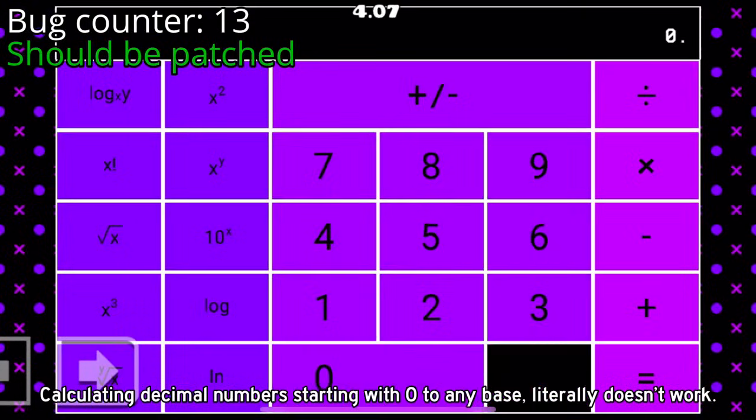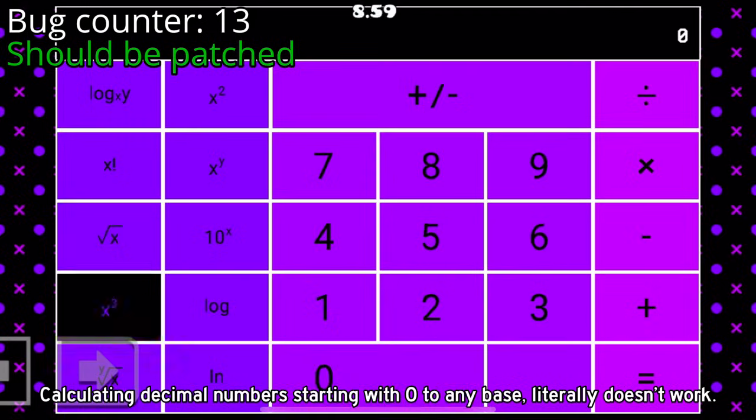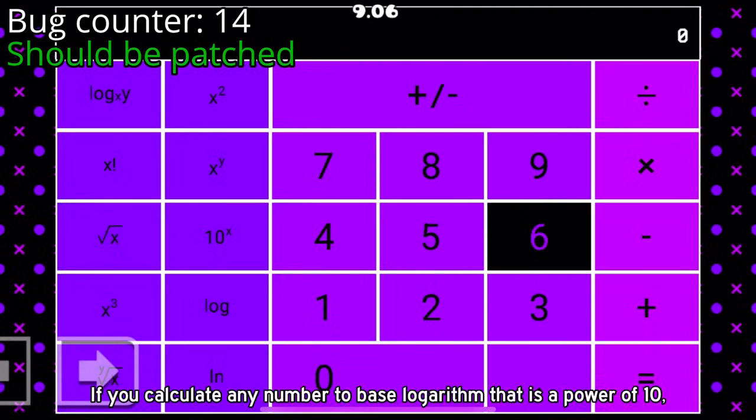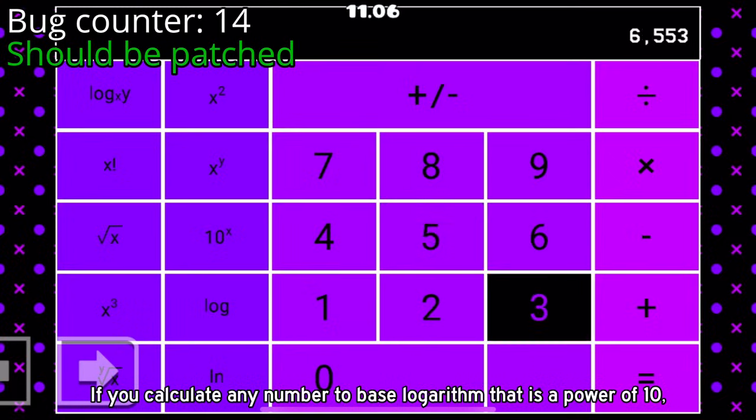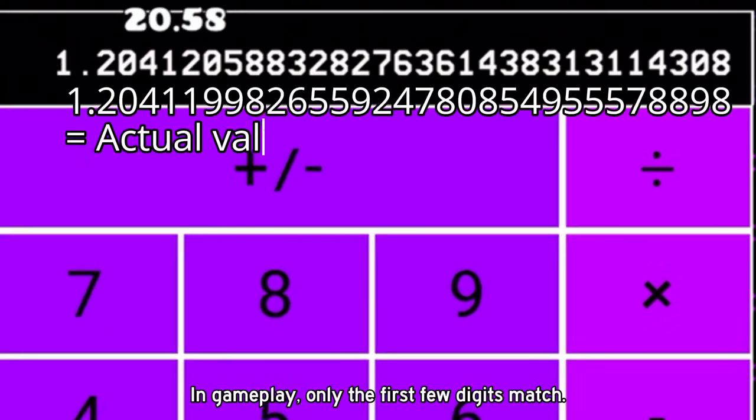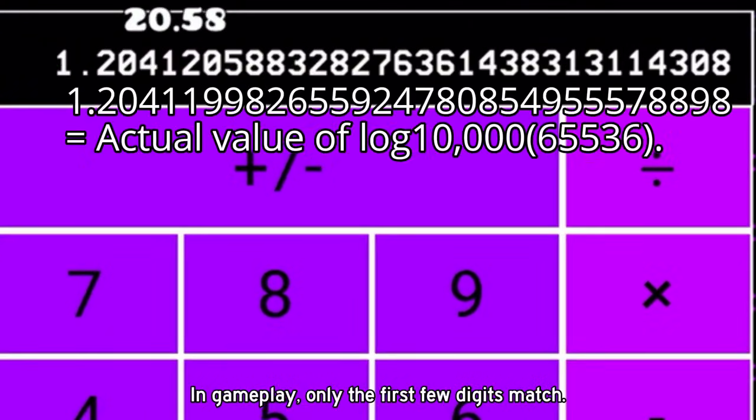Calculating decimal numbers starting with 0 to any base literally doesn't work. If you calculate any number to base logarithm that is a power of 10, the answer will completely bug out. In gameplay, only the first few digits match.